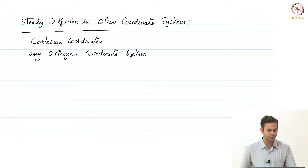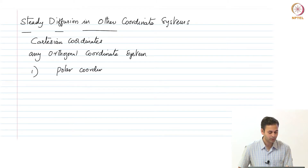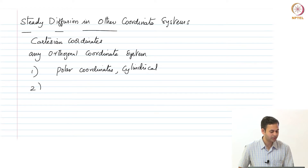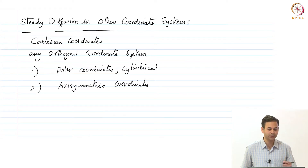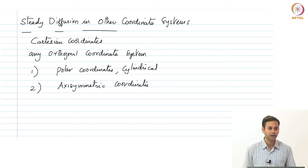Till now we have developed steady diffusion only in Cartesian coordinates. However, the method that we have developed is applicable in any orthogonal coordinate system. A couple of examples of these orthogonal coordinate systems we are going to look at are the polar coordinates or the cylindrical coordinates, and the other example is axisymmetric coordinates.